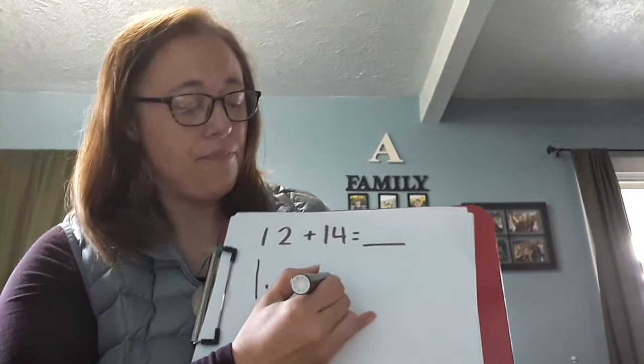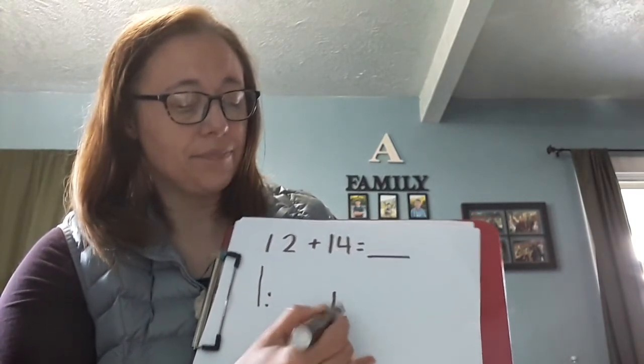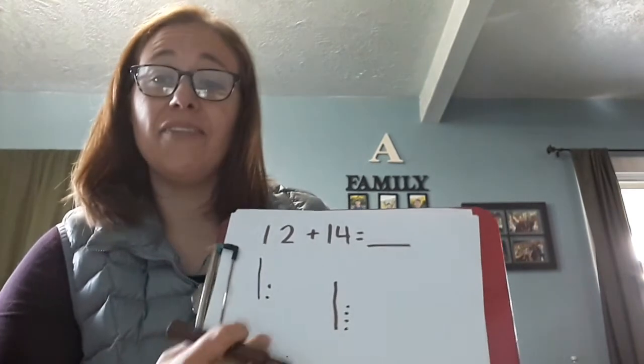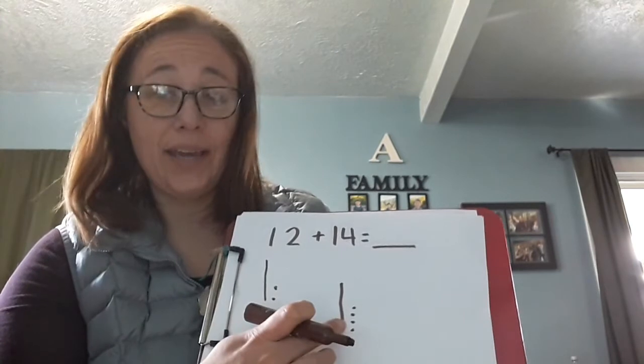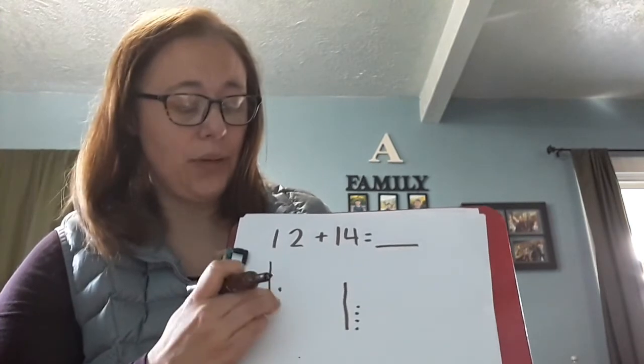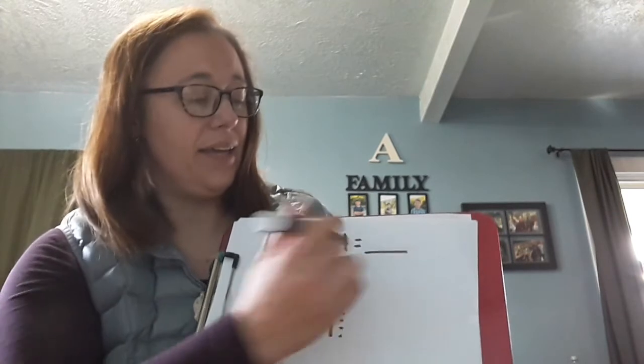Fourteen, of course, would be one stick of ten and four ones. And then to figure out twelve plus fourteen, I just go, well, ten, twenty count my tens first, and then twenty one, twenty two, twenty three, twenty four, twenty five, twenty six.